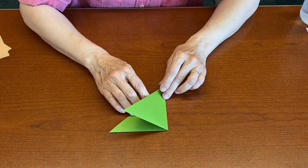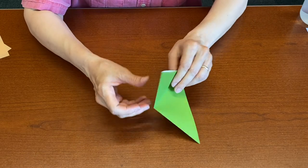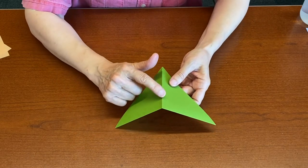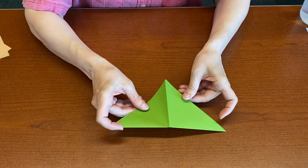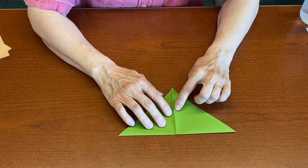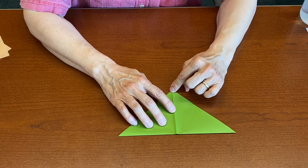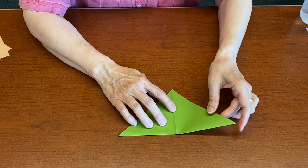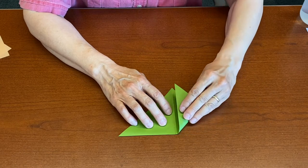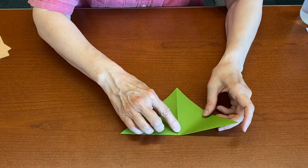Now open the paper back up and turn the paper over so that the mountain fold is on top. The valley fold is underneath. Now we're going to bring the points up to the 90 degree corner. Let's do the one on the right first.